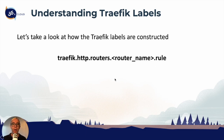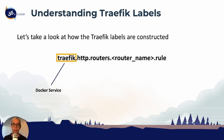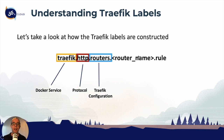Looking at how this label actually works, the first element of the label is the Docker service. This can be traefik or other Docker services you're using. We're telling Docker Swarm to use the traefik labels. The second element is the protocol — in this case HTTP, but this could be TCP or UDP — telling traefik we're using HTTP labels. The next segment is exactly what configuration we're doing in traefik. In this example, we're doing routers, but this can also be services, middlewares, or various different configurations.